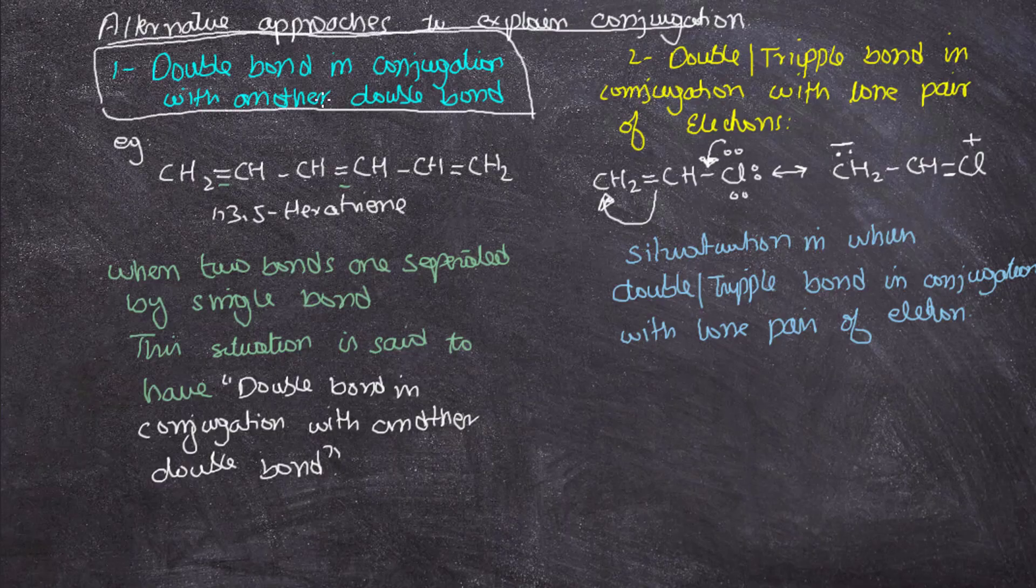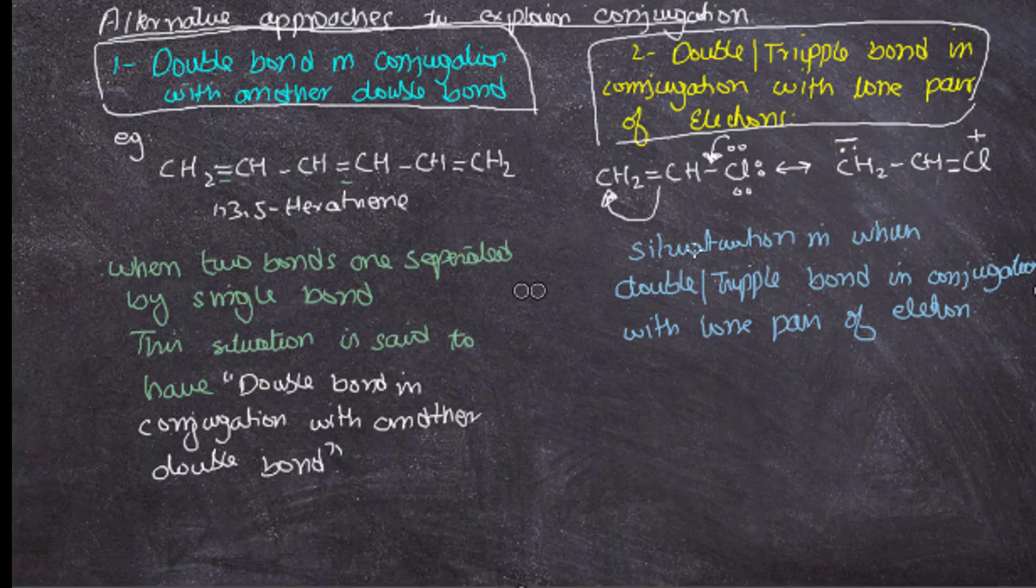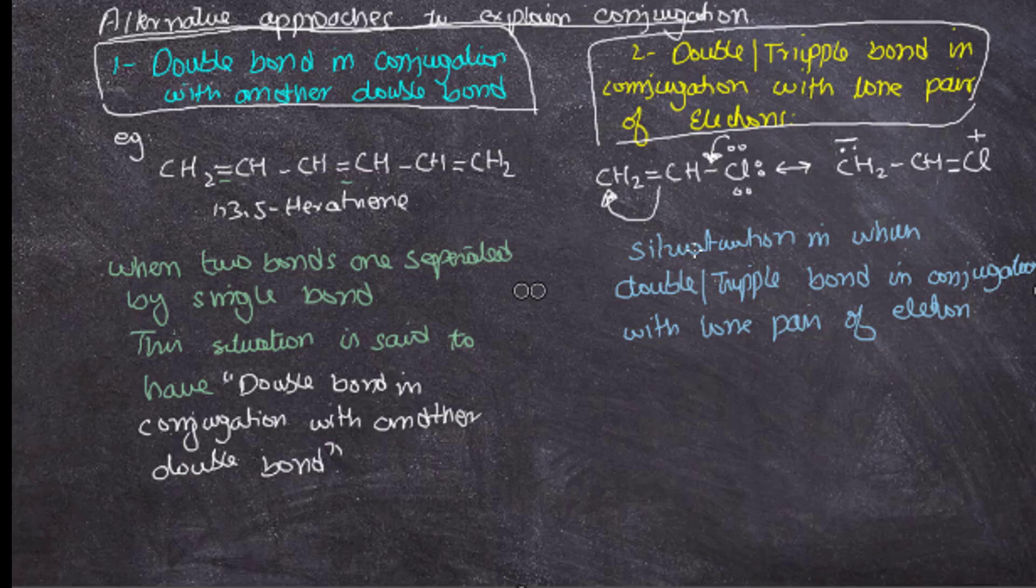Now let's discuss different approaches to explain conjugation. One is a double bond in conjugation with another double bond, and the second condition is double or triple bond in conjugation with lone pair of electrons.